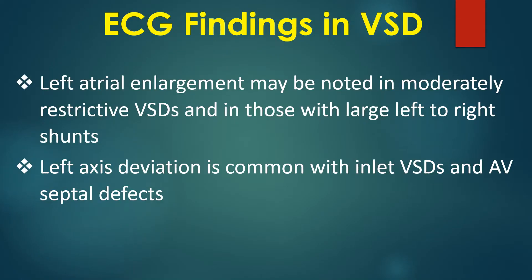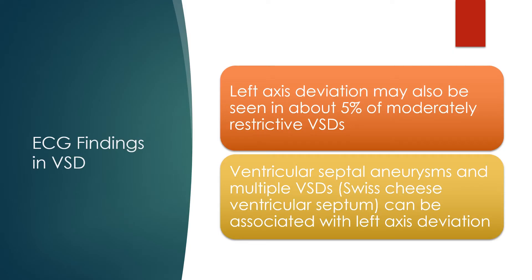Left ventricular enlargement may be noted in moderately restrictive VSDs and in those with large left to right shunts. Left axis deviation is common with inlet VSDs and AV septal defects, and may also be seen in 5% of moderately restrictive VSDs. Ventricular septal aneurysms and multiple VSDs, or Swiss cheese ventricular septum, can also be associated with left axis deviation.